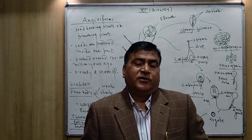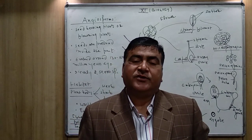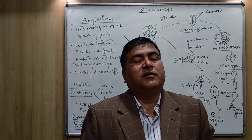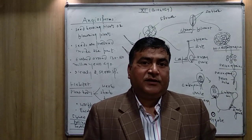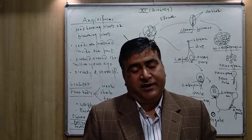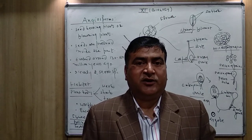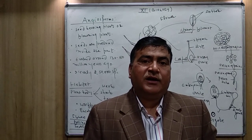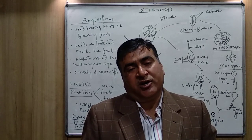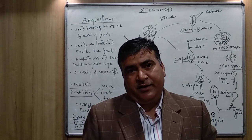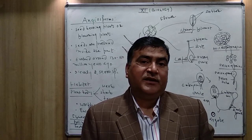Good morning everyone. Today we will discuss the last division of the plant kingdom, that is angiosperms. The angiosperms are also known as flowering plants. They are plants having seeds, but flowers are also present, and that is why angiospermic plants are also known as flowering plants. In all the members of angiosperms, the seeds are enclosed by a covering — the seeds are not naked; they are present inside the fruits.